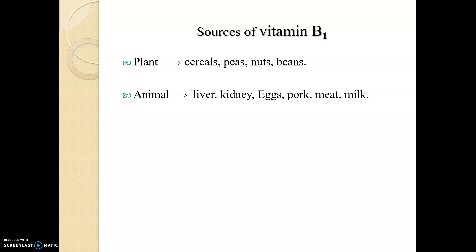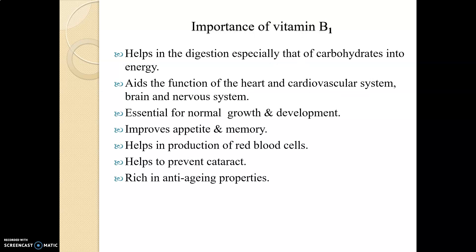Sources of vitamin B1: plant sources are cereals, peas, nuts, and beans. Animal sources are liver, kidney, eggs, pork, meat, and milk. The importance of vitamin B1 is that it helps in digestion, especially of carbohydrates into energy, and it aids the function of the heart and cardiovascular system.